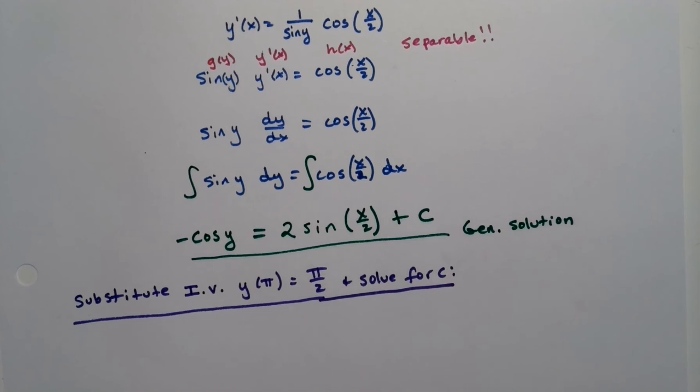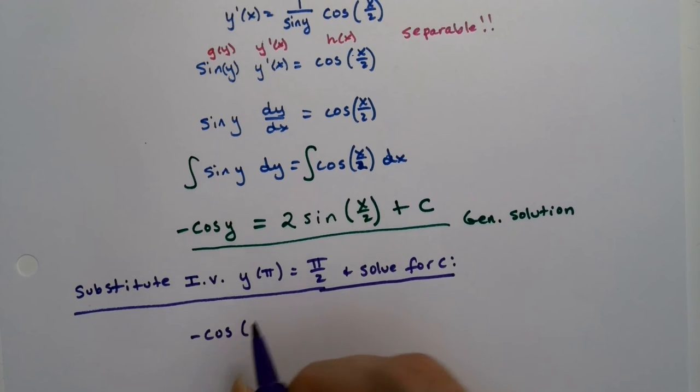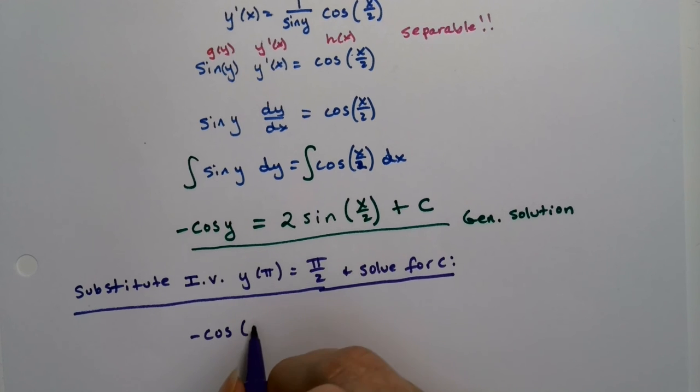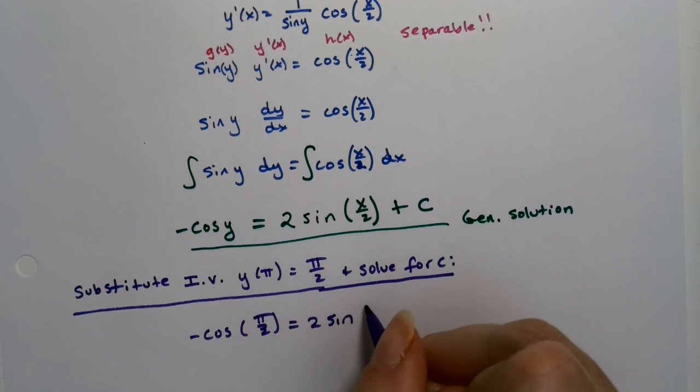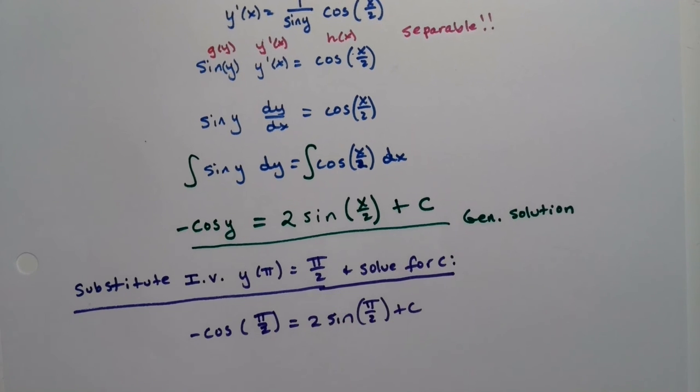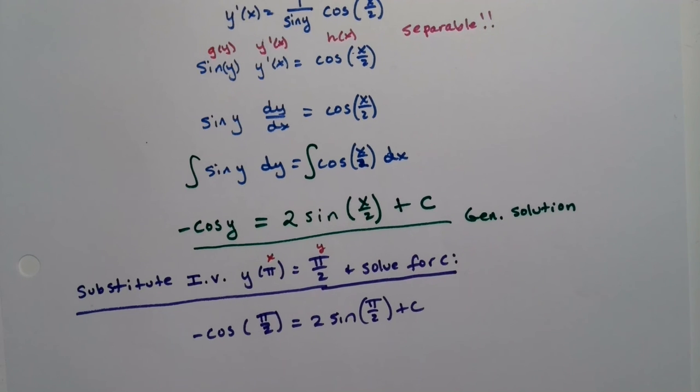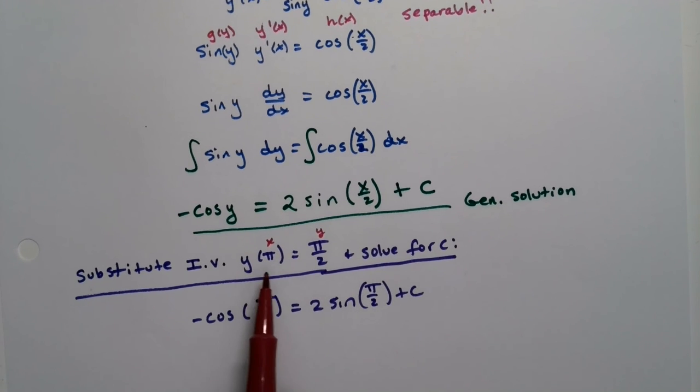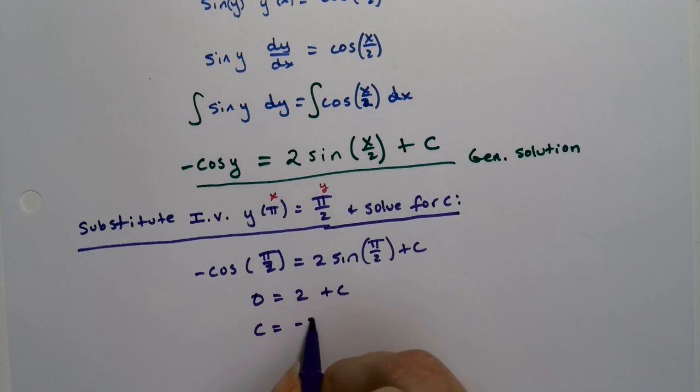So we're going to do that. I will take negative cosine of y, which is π over 2, is equal to 2 sine of π over 2 plus c. Remember, don't get confused by this notation. That's x, that's y. Y is a function of x. Okay, so let's see. Cosine of π over 2 is 0. Sine of π over 2 is 1. So that means that c is negative 2.